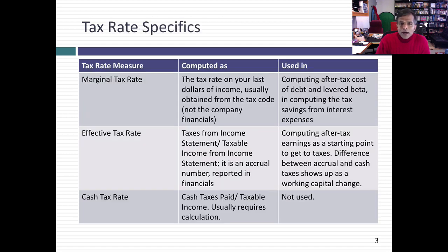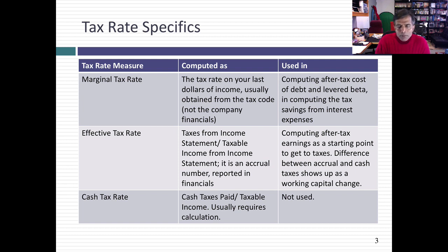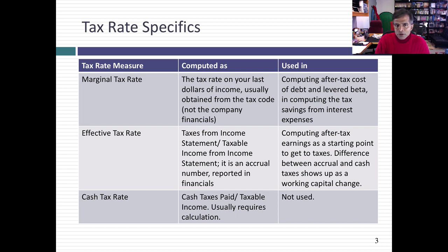Let's look at some very specific measures of tax rates. There are three different versions of tax rates you might run into, and you might as well get used to them because they play different roles in valuation. The first is a marginal tax rate. What is a marginal tax rate? It's the tax rate you have to pay on your last dollar of income. You're likely to find this not in the financials of the company, but in the tax code, and it'll vary depending on which country's tax code you look at.